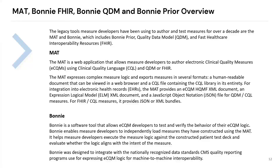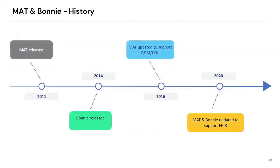Bonnie was designed to integrate with the National Recognized Data Standards that the Centers for Medicare and Medicaid Services Quality Reporting Program uses for expressing eCQM logic for machine-to-machine interoperability. Here is a brief history of MAT and Bonnie: MAT was released all the way back in 2011, then Bonnie was released in 2014. In 2016, MAT was updated to support the QDM CQL specification of measures, and then in 2020, MAT and Bonnie were updated to support FHIR.